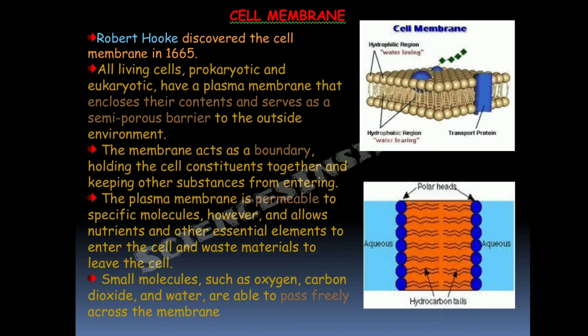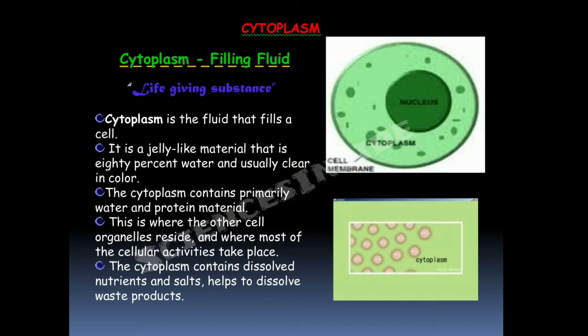Cytoplasm is basically the filling fluid — a life-giving substance which gives life to the cell. It is a jelly-like material that is 80% water and usually clear in color. Cytoplasm contains water and protein material, and this is where the other cell organelles reside and where most cellular activities take place. It also contains dissolved nutrients and salts and helps to dissolve waste products.